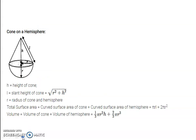The next important combination is cone on a hemisphere. You have a toy question in your textbook. Here also, total surface area is curved surface area of cone plus curved surface area of hemisphere: πRL + 2πR². Volume is volume of cone plus volume of hemisphere: (1/3)πR²h + (2/3)πR³.